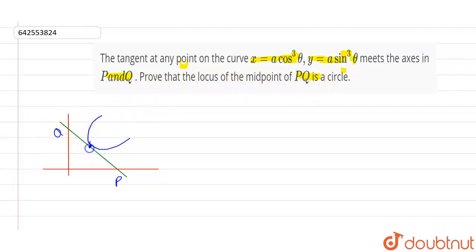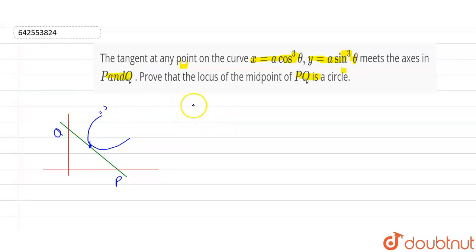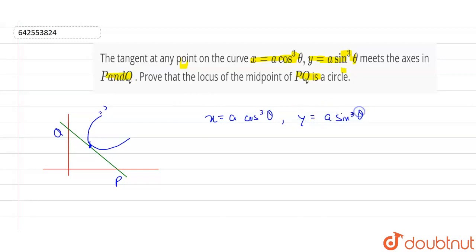We have to prove that the locus of the midpoint of P and Q is a circle. So what we have to prove is this curve equation as a circle equation. First, we need to find the points of P and Q intercepts, and for that we need to find the slope of the tangent and the x and y coordinates. It's given that x = a cos³θ and y = a sin³θ.